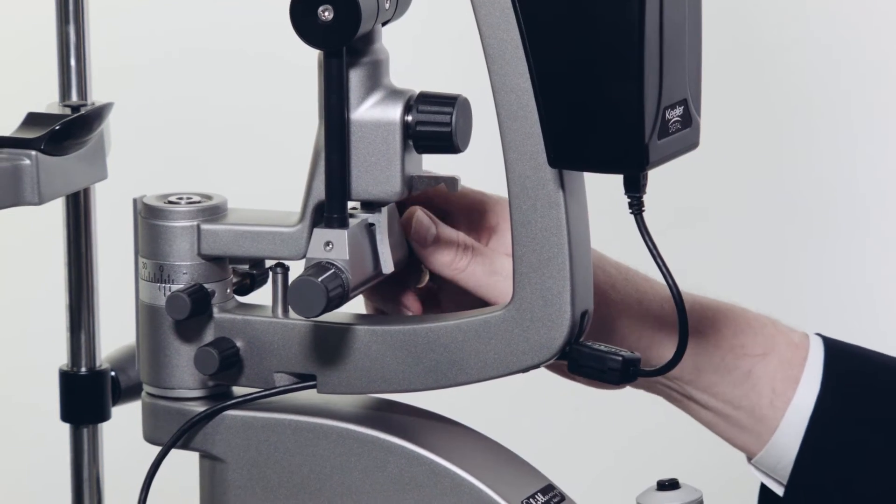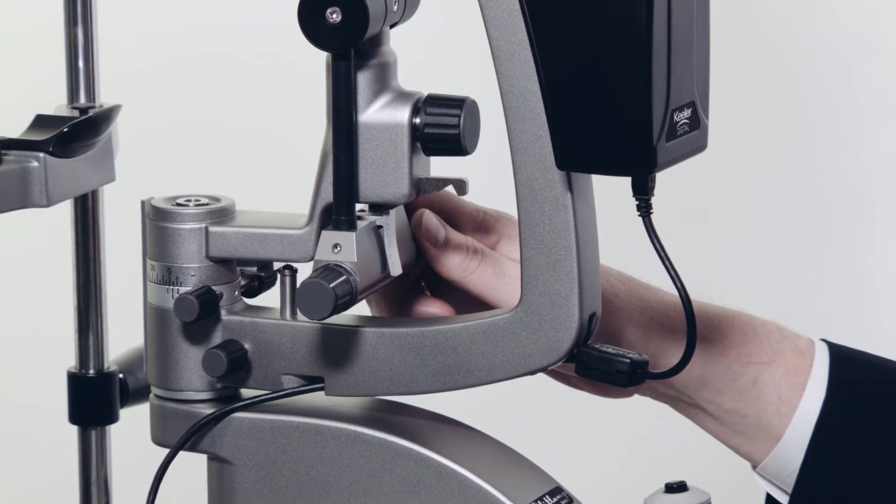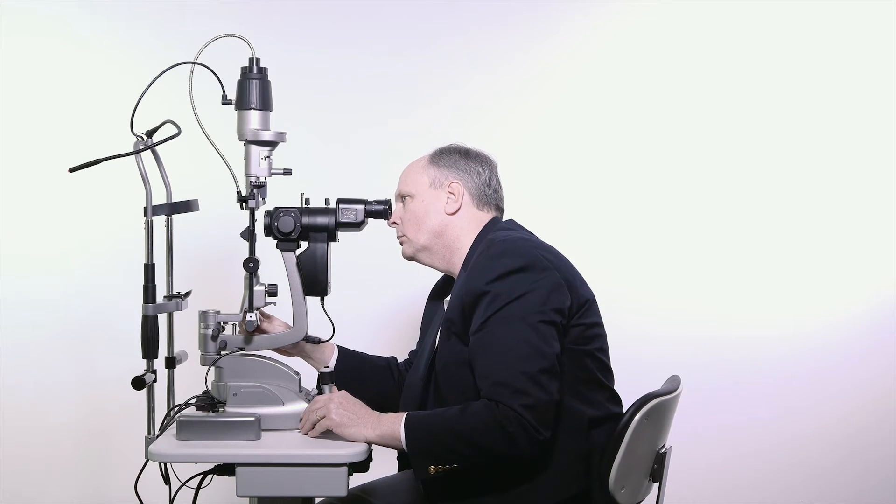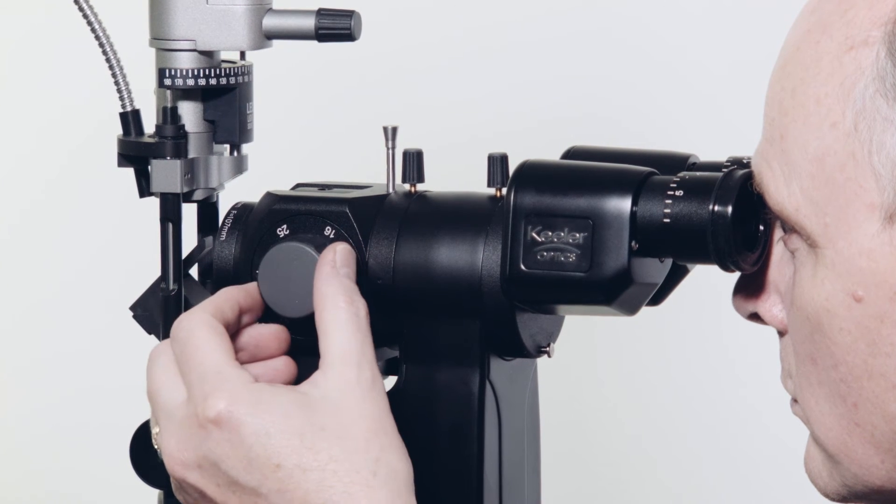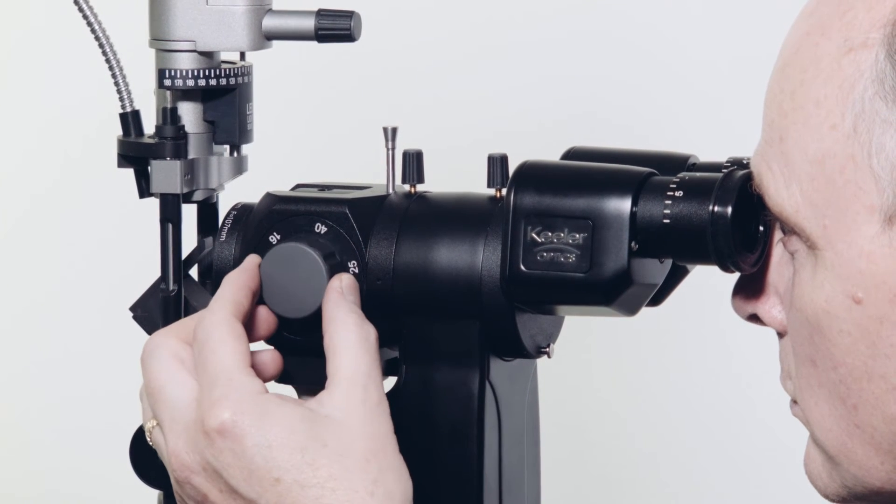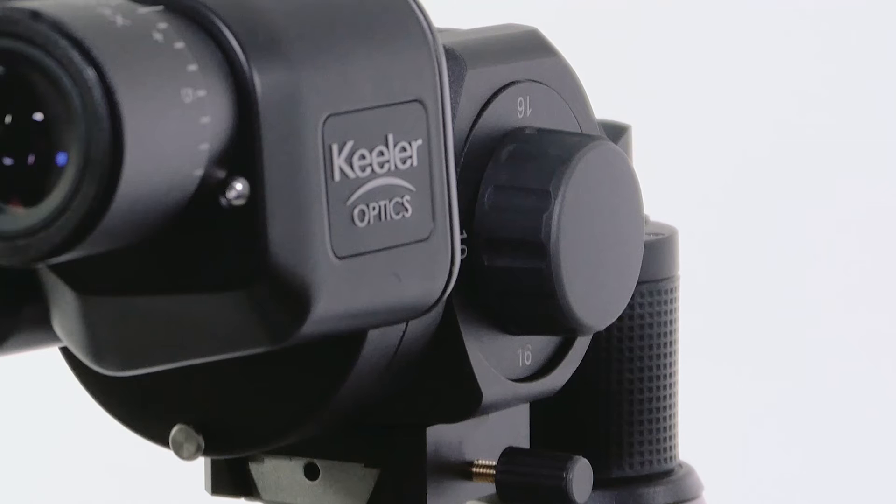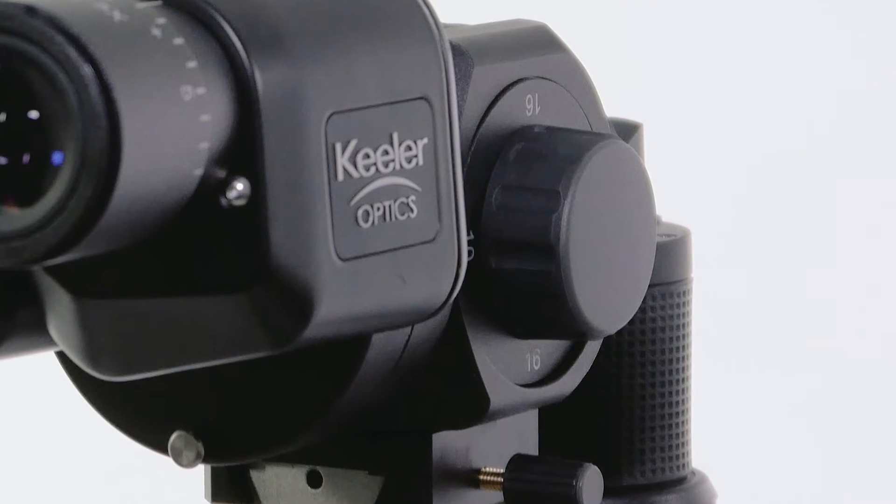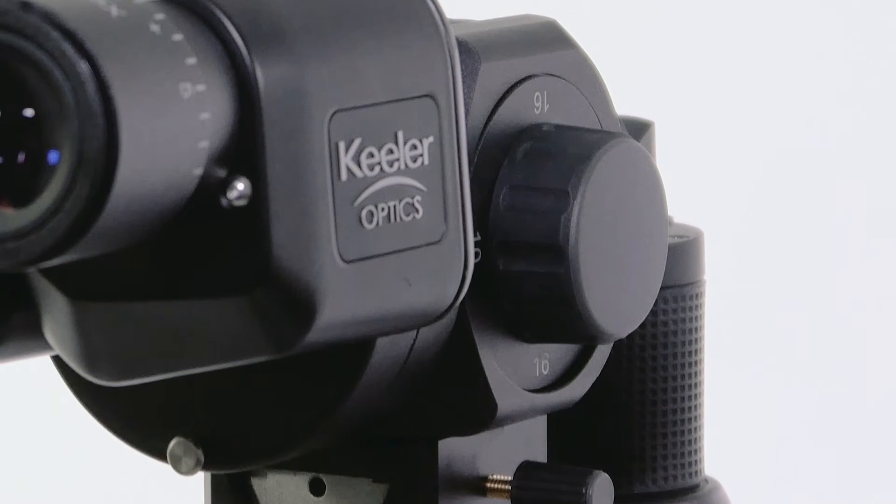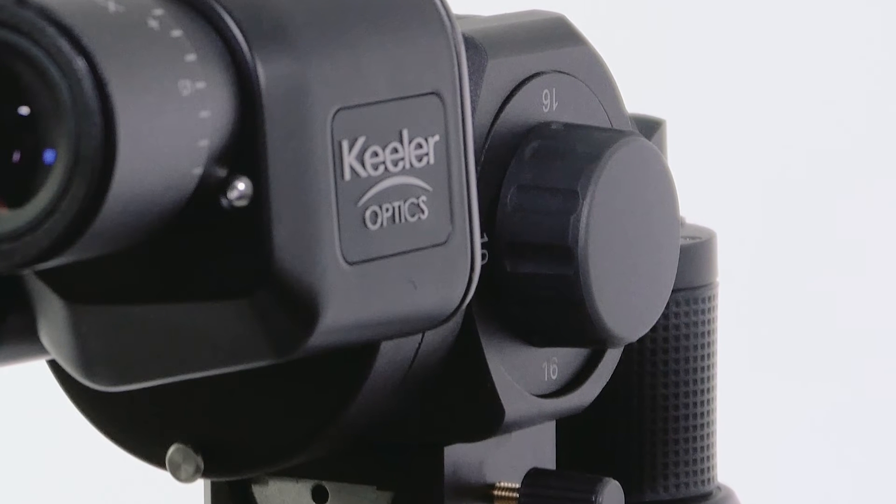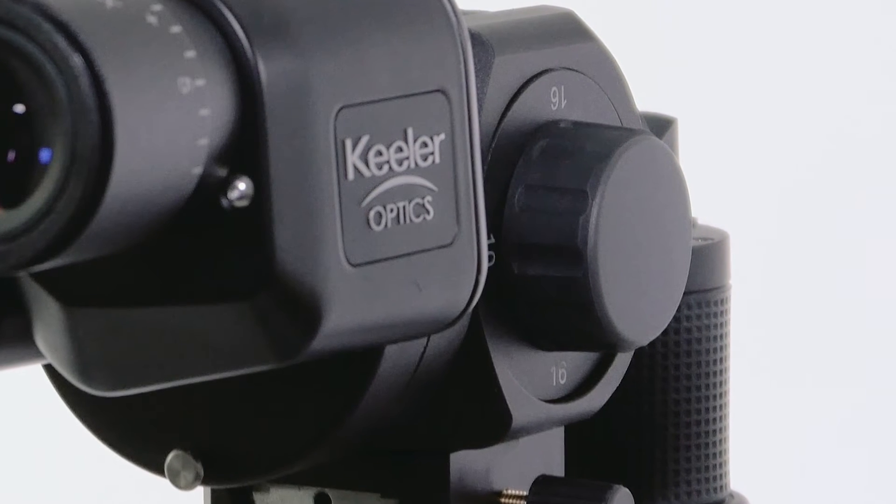Adjust the slit width using this adjuster. Slit width ranges from 1 to 12mm. Magnification is adjusted using the 3 or 5 step drum here. Magnification ranges from 6 times to 40 times on the 5 step drum and 10 times to 25 times on the 3 step drum.